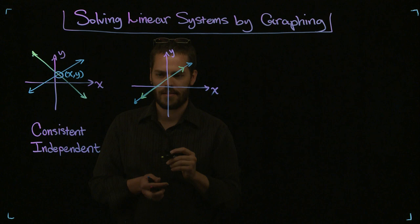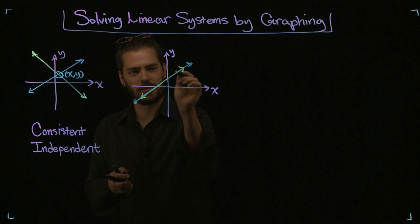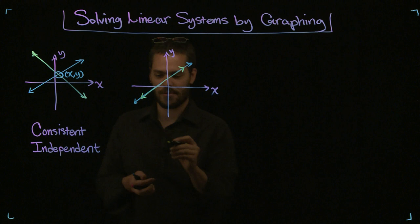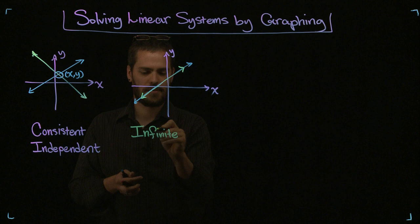Now, what are we going to say as far as solutions to this system? Since every point on the line is a solution to that line, it appears, and is true, that these lines share every point in common. Therefore, for this case, there are actually an infinite number of solutions.